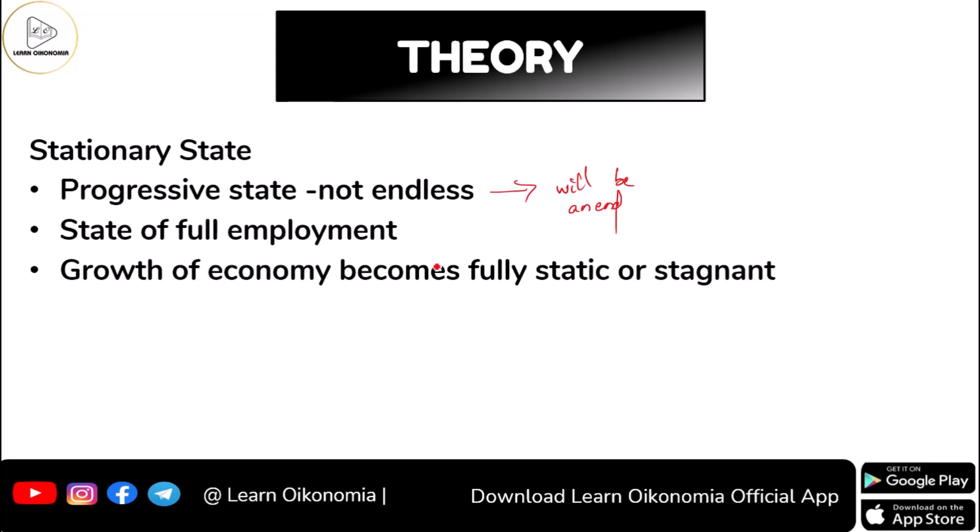Smith recognized this final state as something called the stationary state. It would be a state of full employment where every resource would be fully utilized, and after this point the growth of the economy would be fully static or stagnant. This is something Smith gave emphasis to in his theory of development.